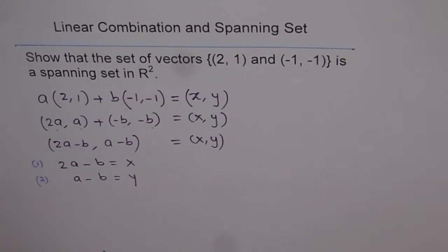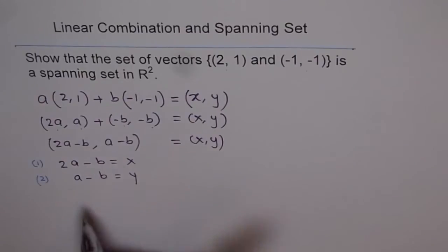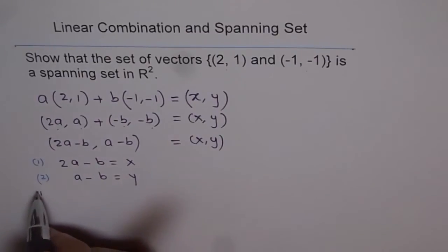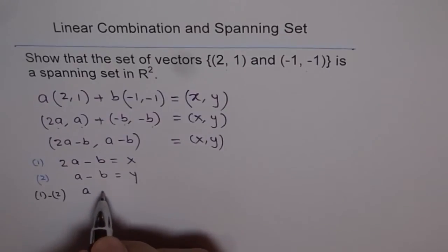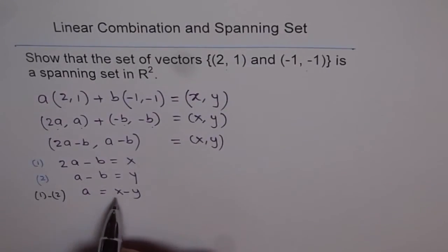Now here in this case, what we can do is, if we subtract the 2, because it's -b and -b, same coefficients. So let's do 1 minus 2. If I do 1 minus 2, I get a equals x - y. So I get a value of a.